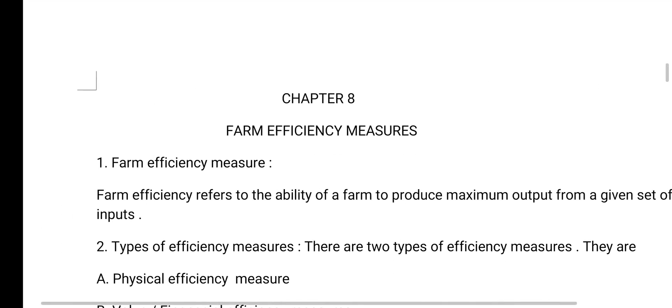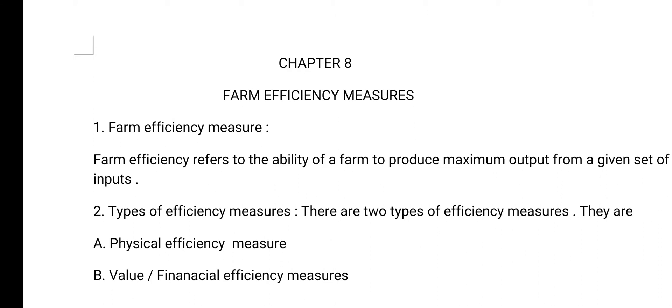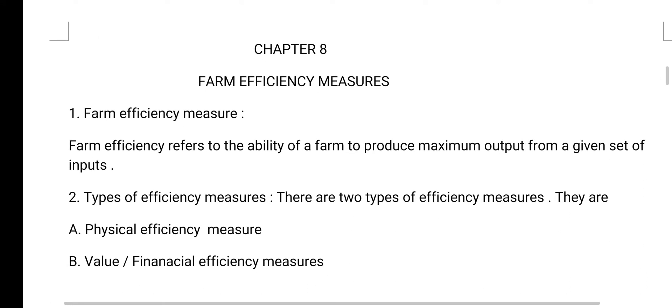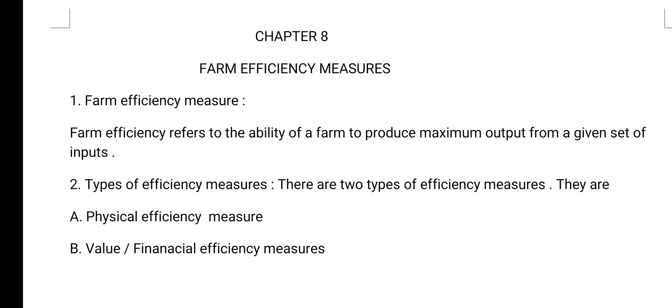Chapter 8: Farm Efficiency Measure. Our first topic is Farm Efficiency Measure. Farm efficiency refers to the ability of a farm to produce maximum output from a given set of inputs.